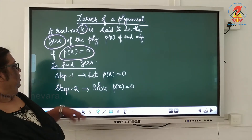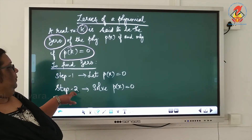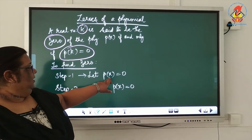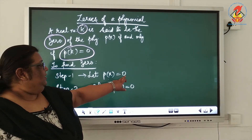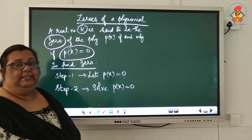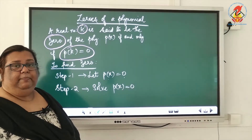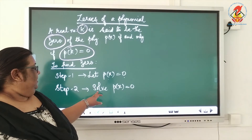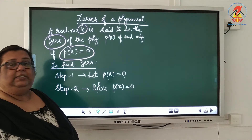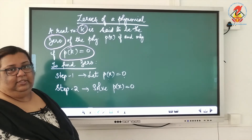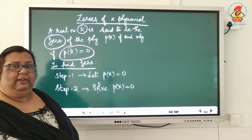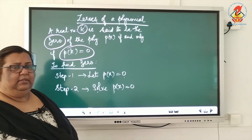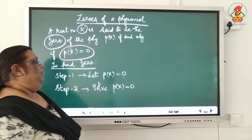How to find the zero? There are two steps. First, we have to equate p(x) to zero — that is, p(x) equals zero. The second step is to solve it. So shall we do some example problems?